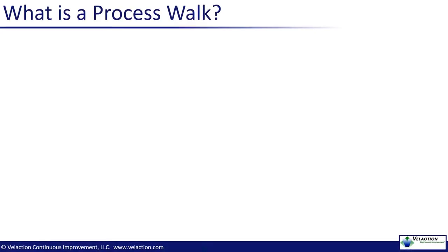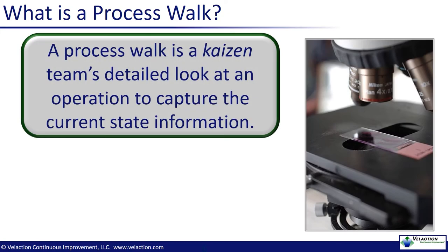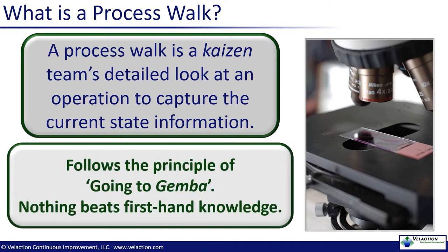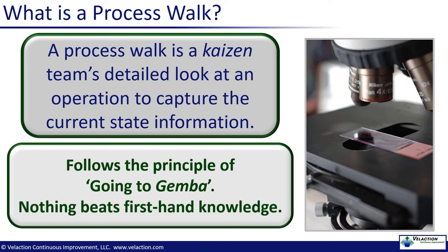A good place to start is by talking about what a process walk actually is. Basically, it is just a deep dive into the nuts and bolts of a process in order to gain a highly detailed understanding of how an operation is performed. The goal is to quickly become an expert on the current state of that work. The reason we do a process walk instead of just relying upon the knowledge of team members or information recorded in process documents is that there is no substitute for going to Gemba. Gemba is a Japanese term that loosely translated means the actual place where work is done. Seeing the process first-hand does two things.